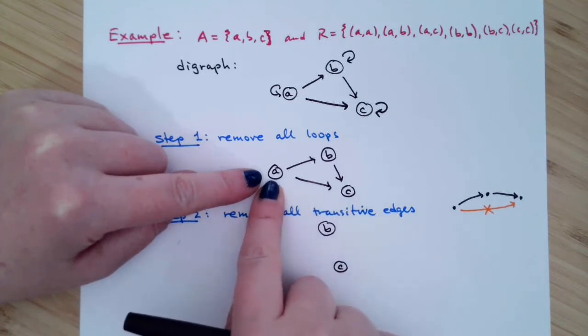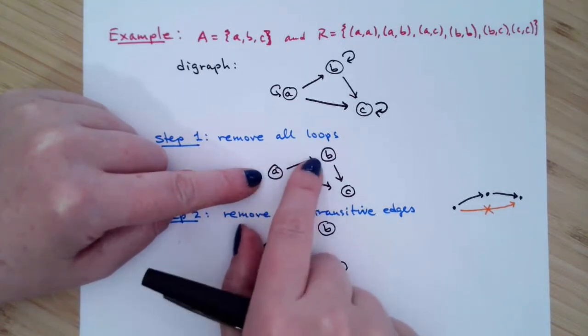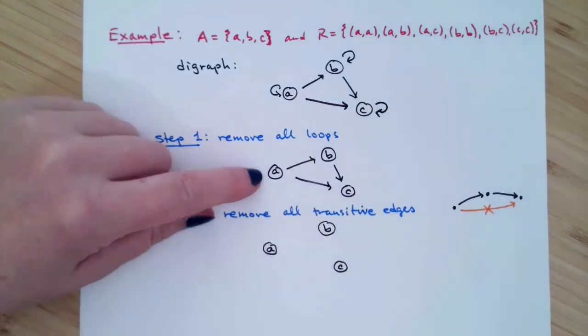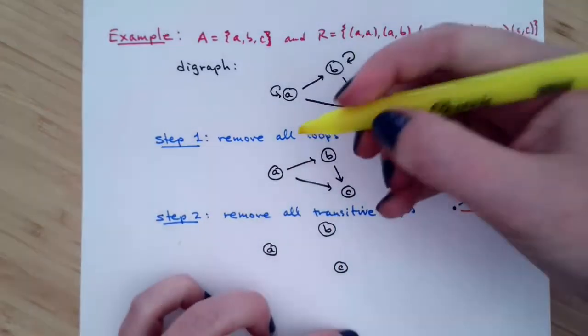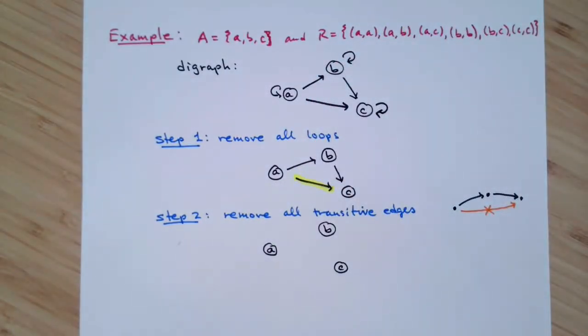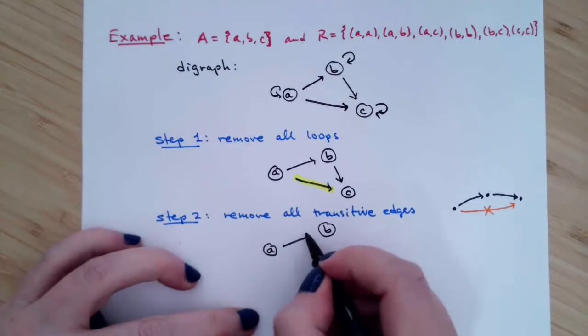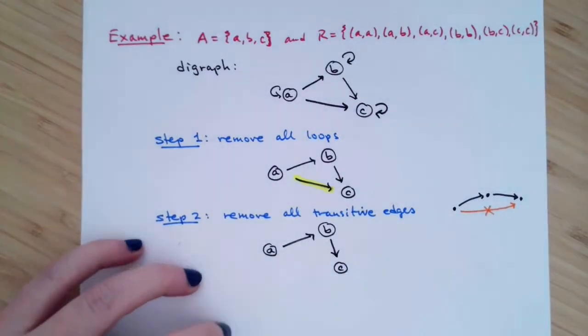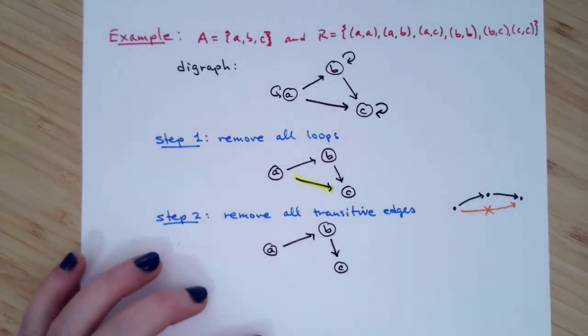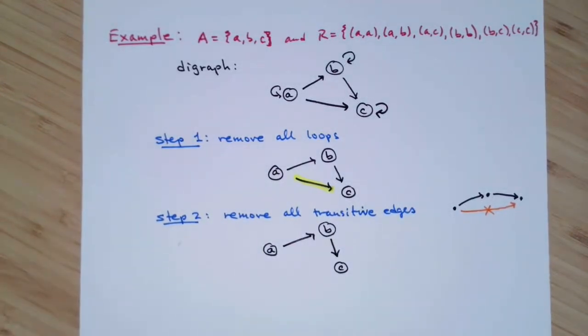If we start at A, we could go to C, but then we can't go anywhere else, so there's no length-two paths there. But if we start at A and we go to B, well we can continue on to C, so that would be a length-two path, which means we need to remove the edge from A to C. That would be a transitive edge. Now once we remove that transitive edge, notice there's no other length-two path left in our digraph where there's a shortcut.